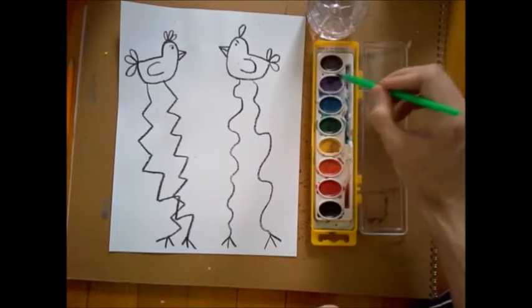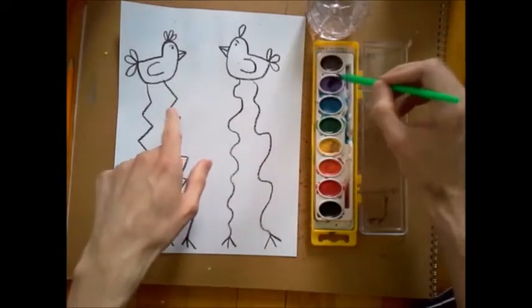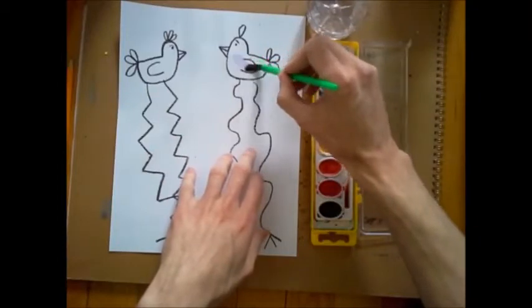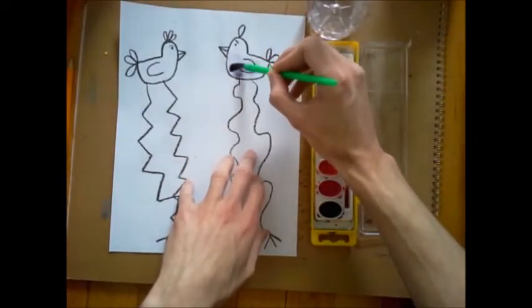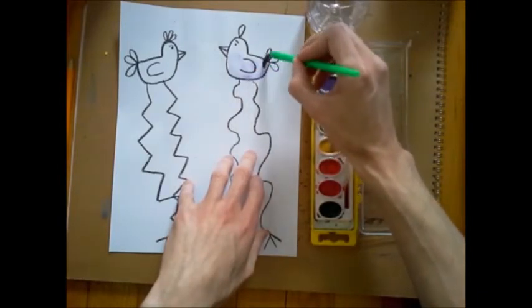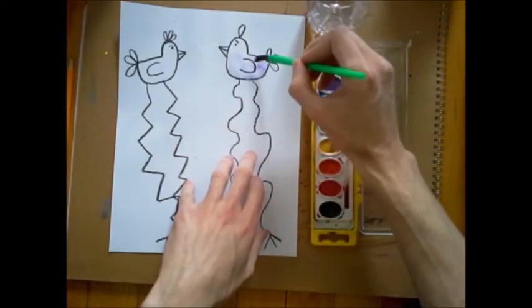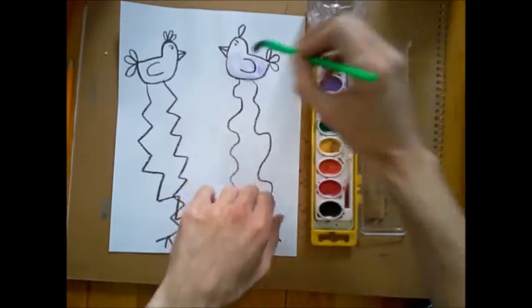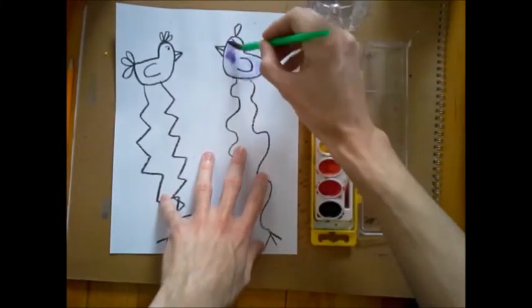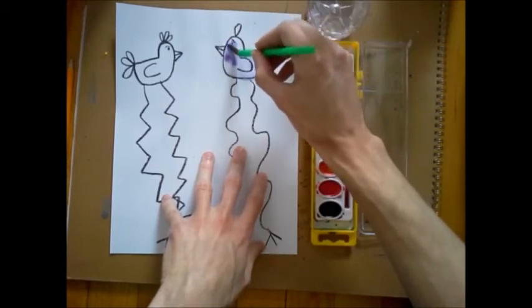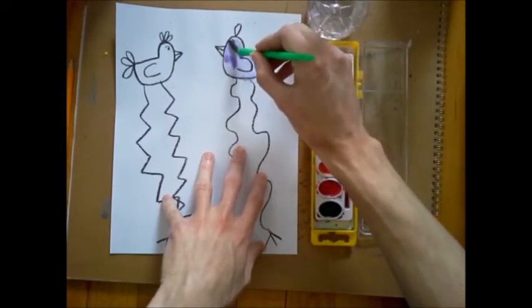One of these birds I'm going to color in purple. Now the reason why I use crayon is because, again, when you paint and use watercolor paint, crayon will not go away when you paint over it. Some things like marker might, but crayon will still stay there. So I'm just going to carefully color in the body of this bird purple.